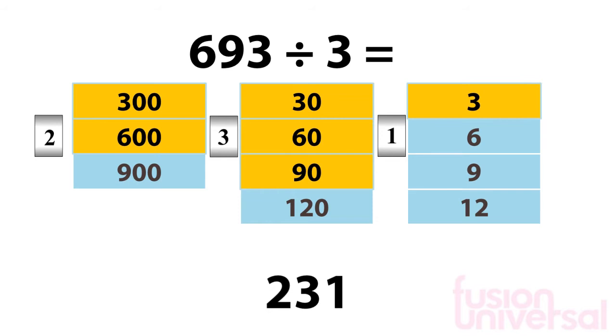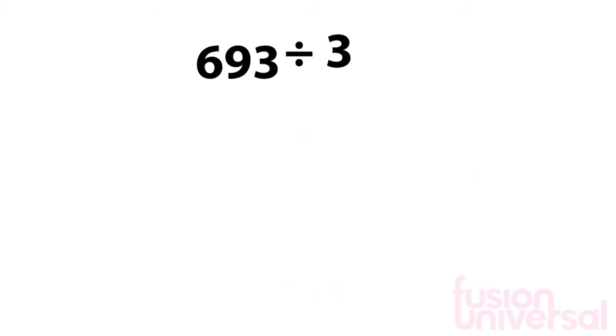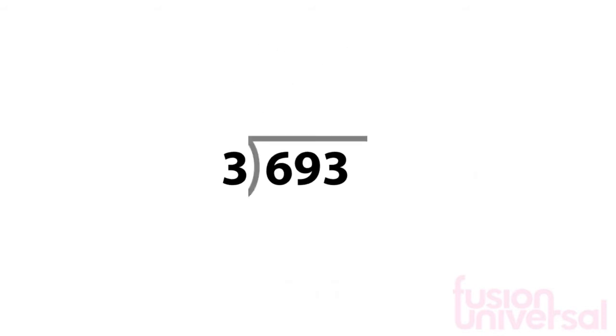231. You don't always need to write out all the multiples. We can rewrite the calculation like this. Notice the bracket symbol we have used. The number we are dividing into goes inside the symbol, and the number we are dividing by goes to the left of the symbol.